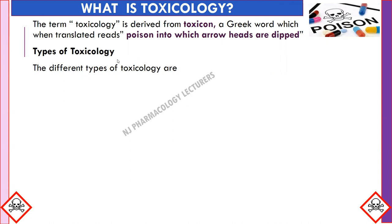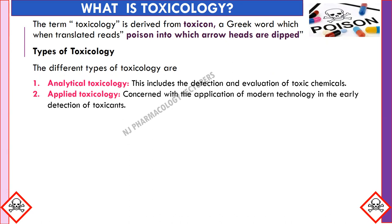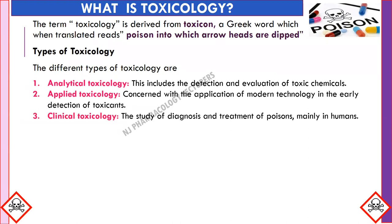The different types of toxicology are seven in total. The first is analytical toxicology, which includes the detection and evaluation of toxic chemicals. Second is applied toxicology, concerned with the application of modern technology in the early detection of toxicants.